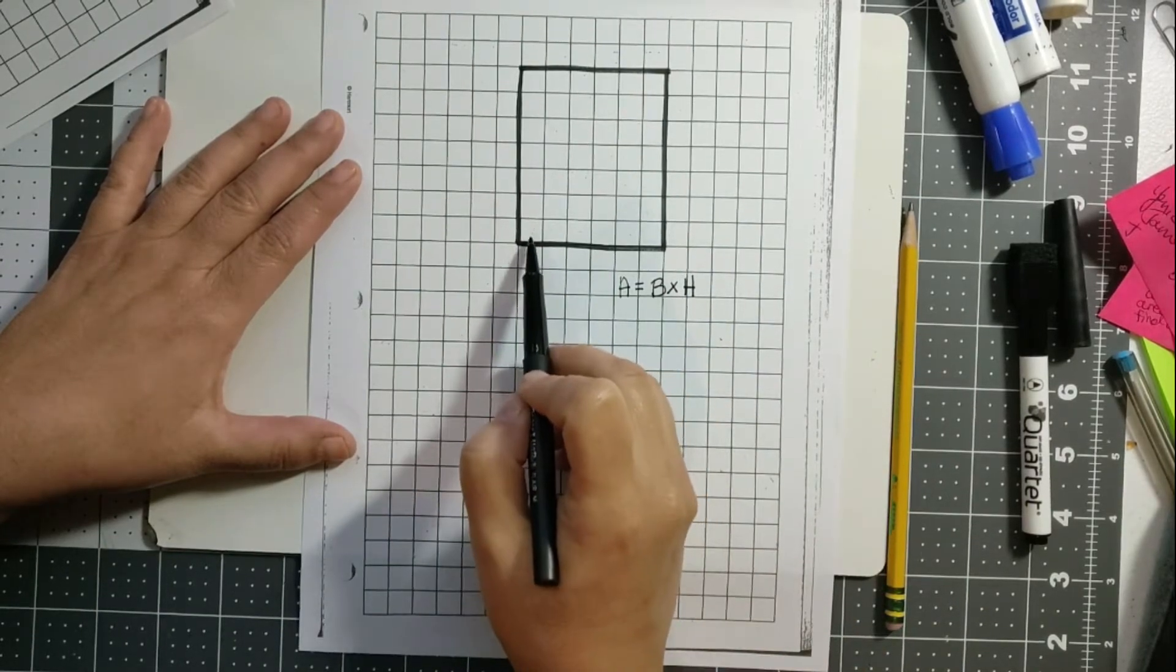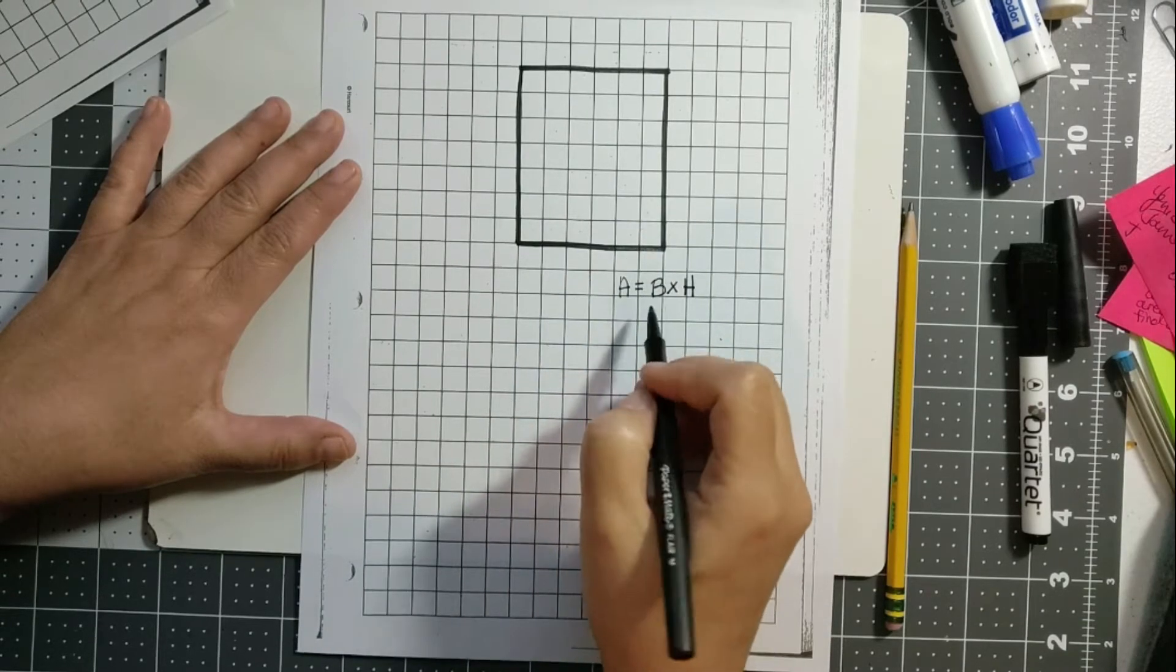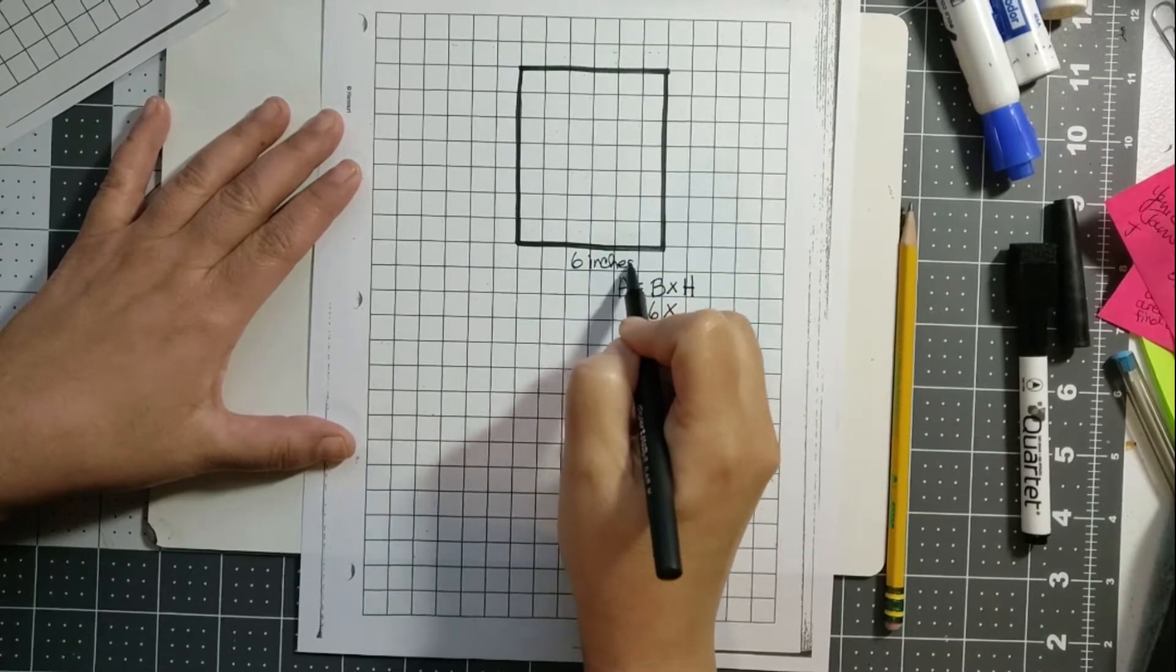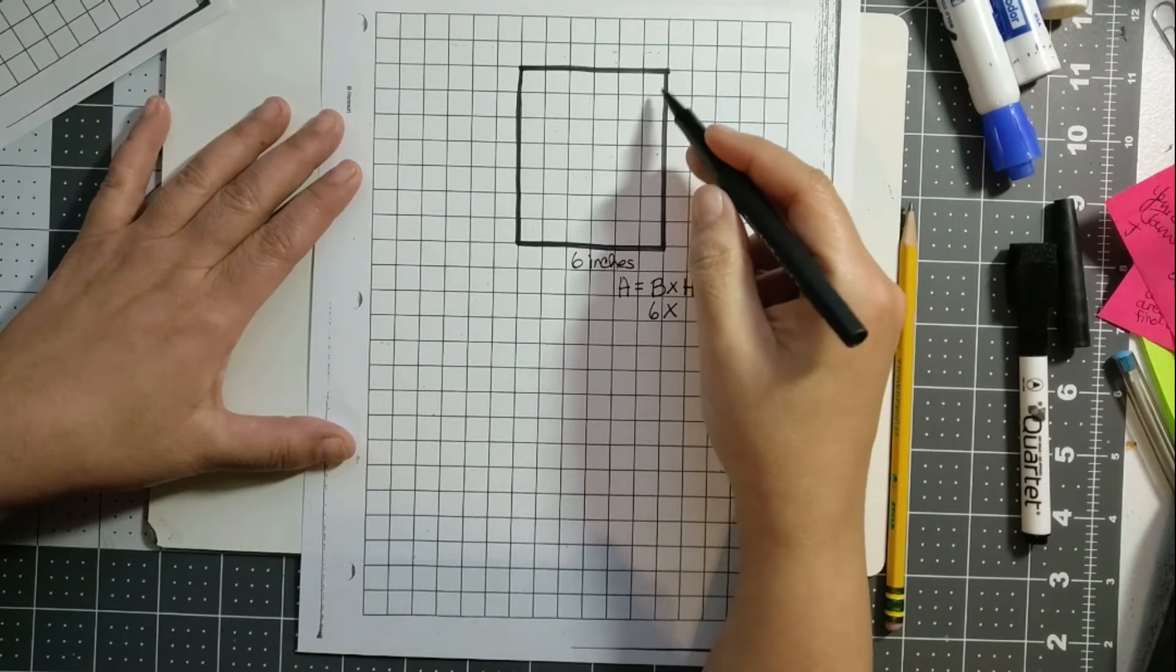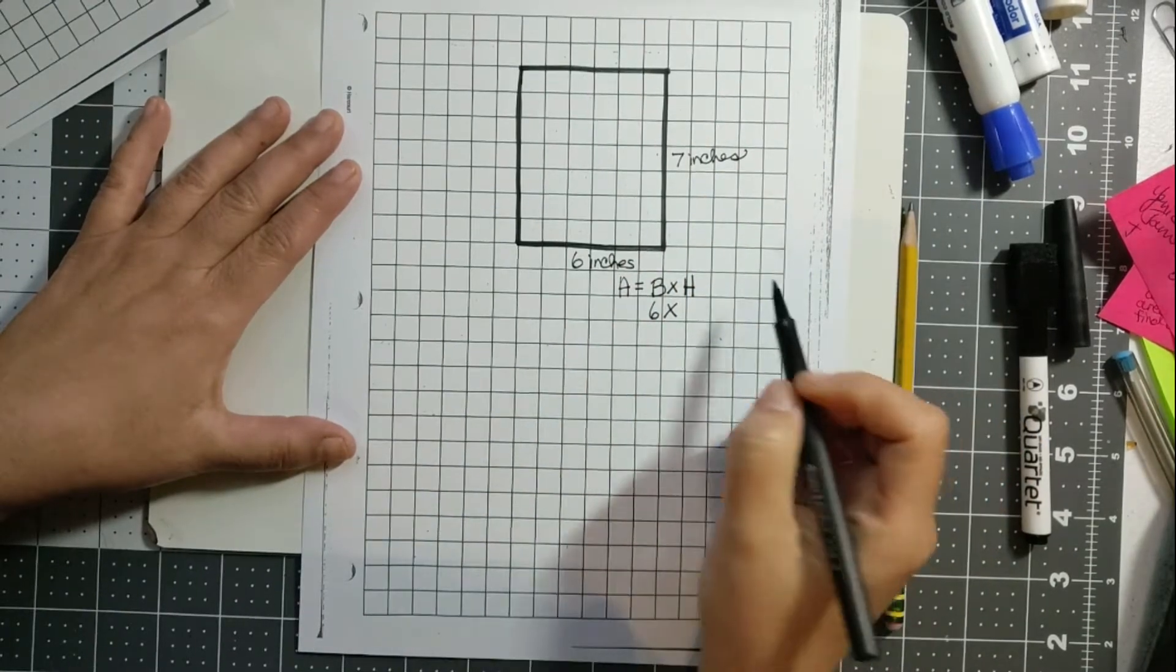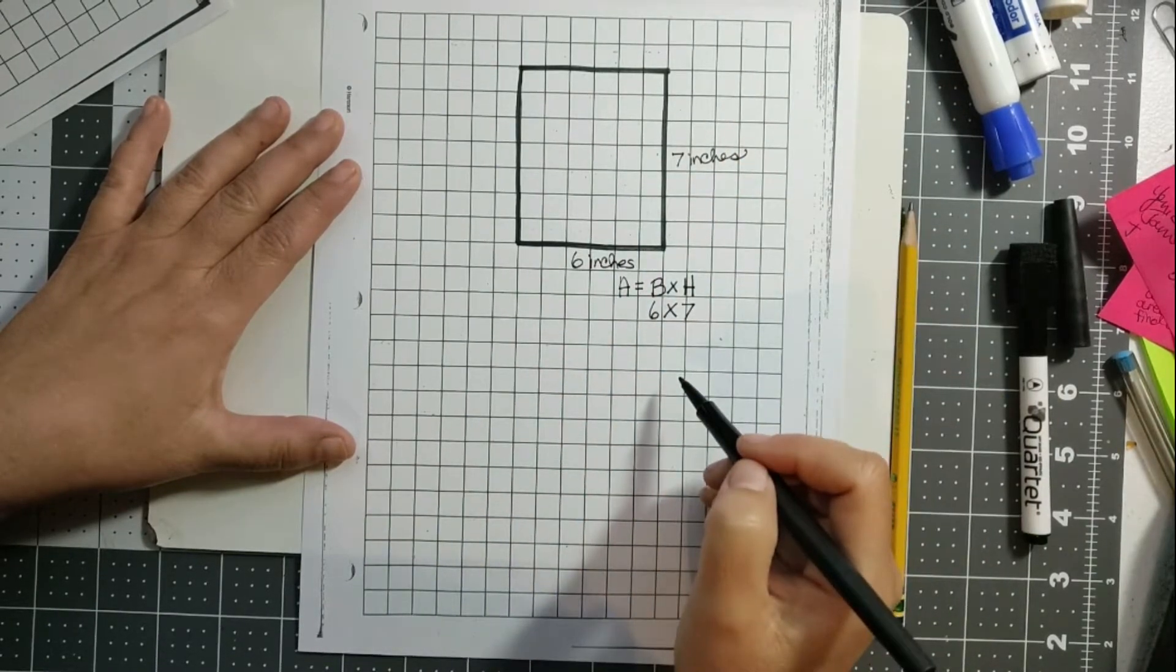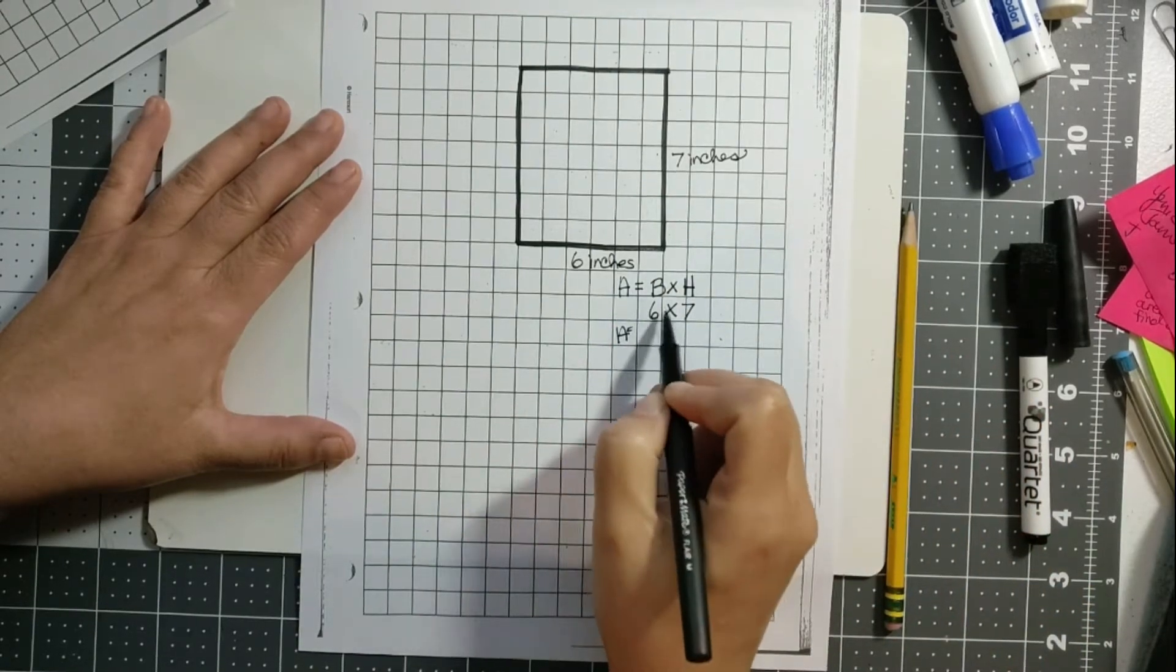So the base here is one, two, three, four, five, six—so six times, we'll say six inches because everything needs to have a unit. And then the height: one, two, three, four, five, six, seven. Okay, so now we know the base is six and the height is seven, so all we have to do is multiply. Six times seven is 42, so the area is 42.